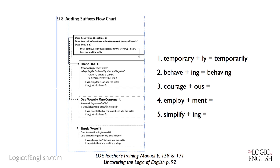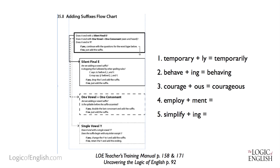Now let's look at courage plus the ending -ous. O-U-S means full of, so courageous is full of courage. Does it end in a silent final E? Yes. Are we adding a vowel suffix? Yes, it begins with O. Is dropping the E allowed by other spelling rules? If we dropped the E, it would say courageous incorrectly — so no, it is not allowed. We must retain the E in courage to make courageous.